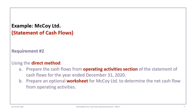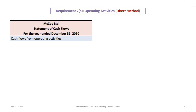This tutorial continues with the McRoy Limited example, Requirement 2: using the direct method, prepare the statement of cash flows for the year ended December 31st, 2020, and prepare an optional worksheet to determine net cash flow from operating activities. Remember that the investing section and financing section are exactly the same as before — the only difference is the operating activity section.